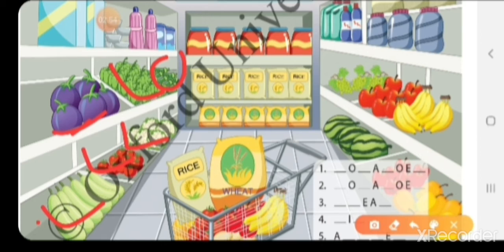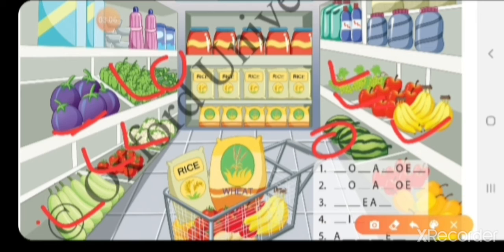Fruits में क्या है? Grapes हैं, apple है, banana है, watermelon है। तो यह हुए vegetables और यह fruits।